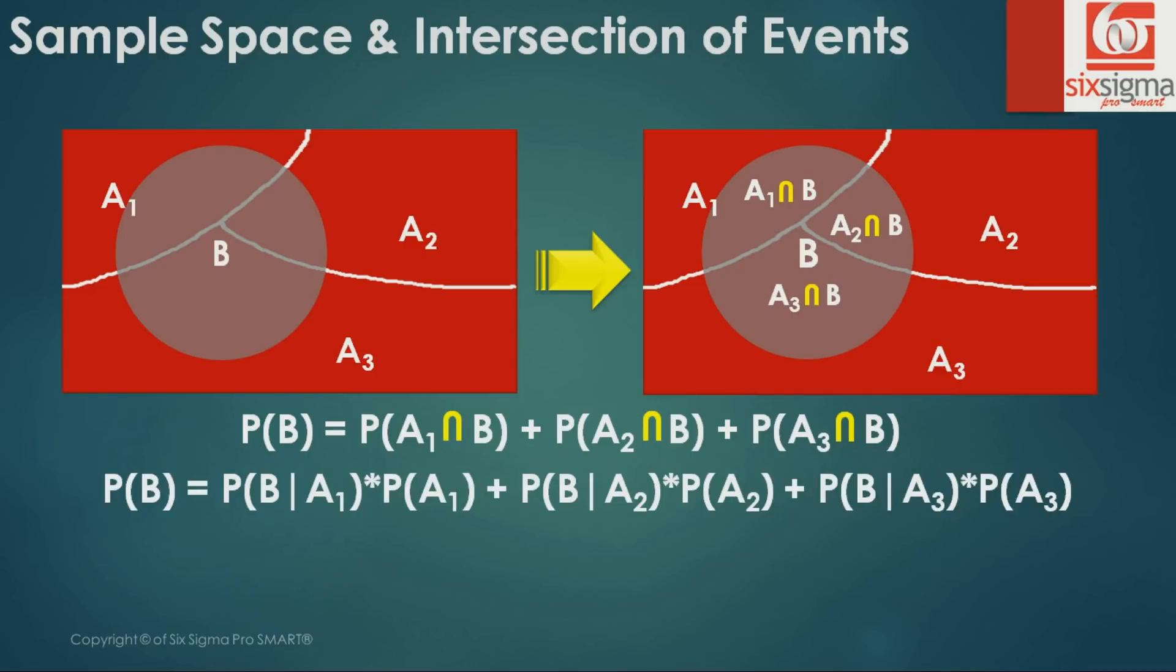If you made a note of equation 1 from the previous slide, A1 intersection B can be written in this form, and so is the case with A2 and A3. So probability of B can be written in this combination. If we were to generalize this equation in the form of an AI where I obtains values from 1 to n, it can be rewritten like this. Sigma here is summation.